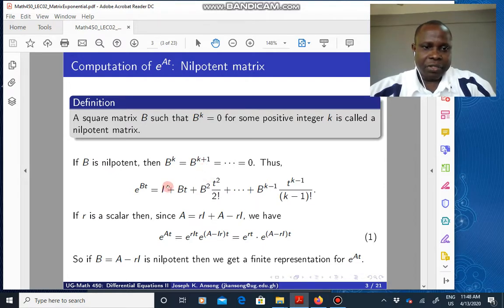Now, why that is important is this. If B is nilpotent, then the matrix exponential is no longer an infinite series. It's truncated because B to the power K times with B to the power K, B to the power K plus one and so on will now go to zero because of this.